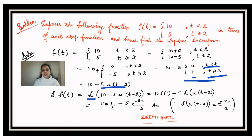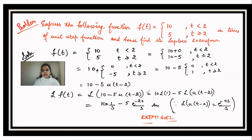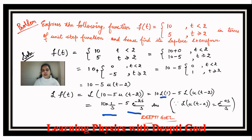Applying the Laplace transform using linearity: L{10 - 5·u(t - 2)} = 10·L{1} - 5·L{u(t - 2)}. Since L{1} = 1/s and L{u(t - a)} = e^(-as)/s with a = 2, the result is 10/s - 5·e^(-2s)/s.